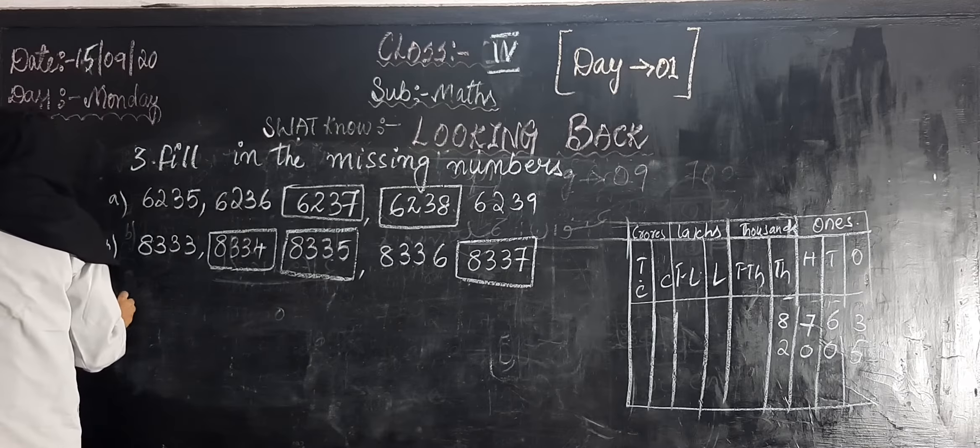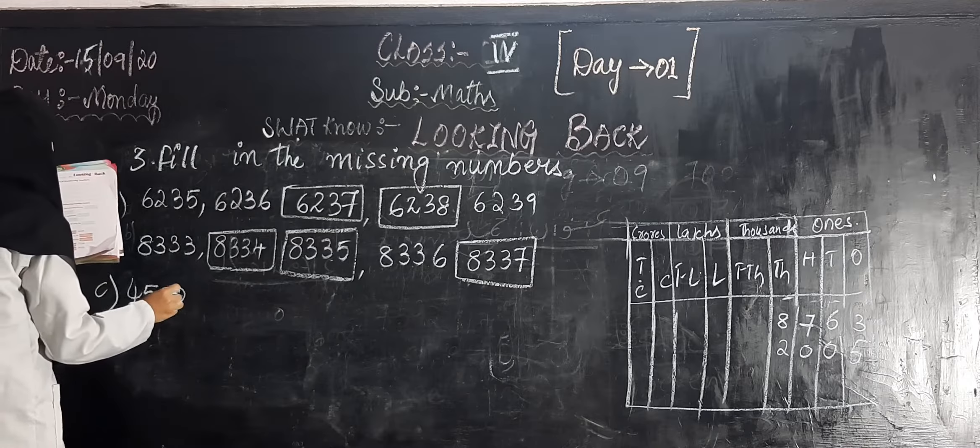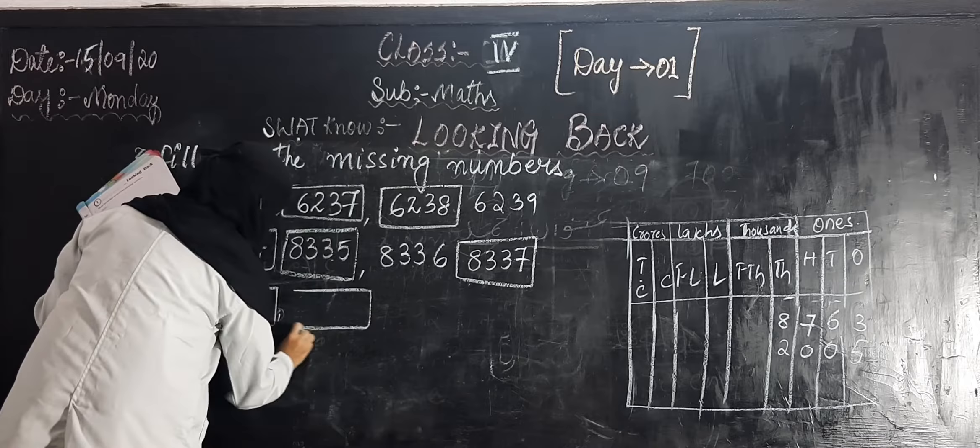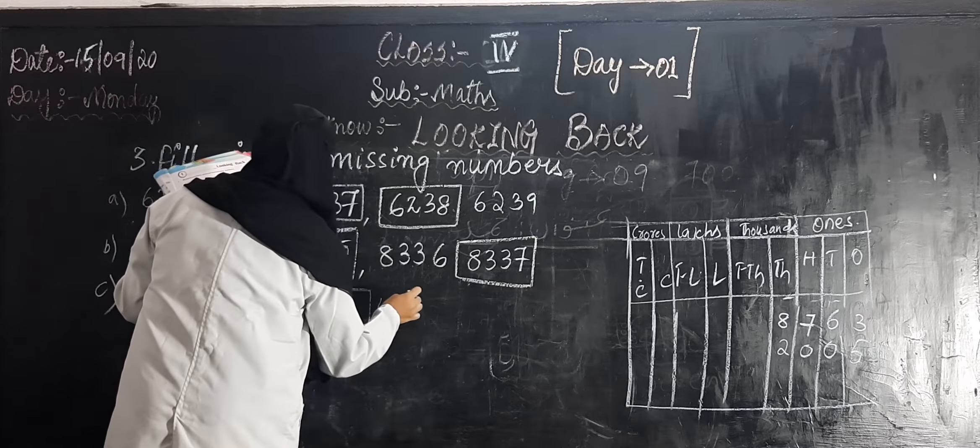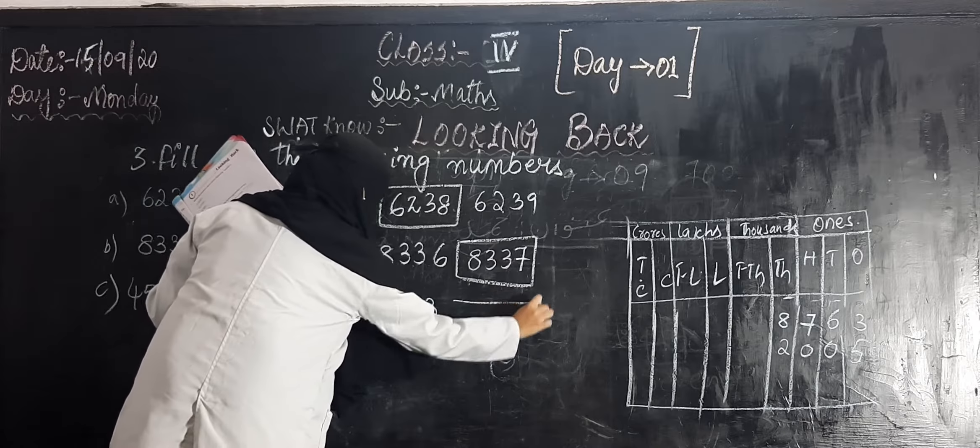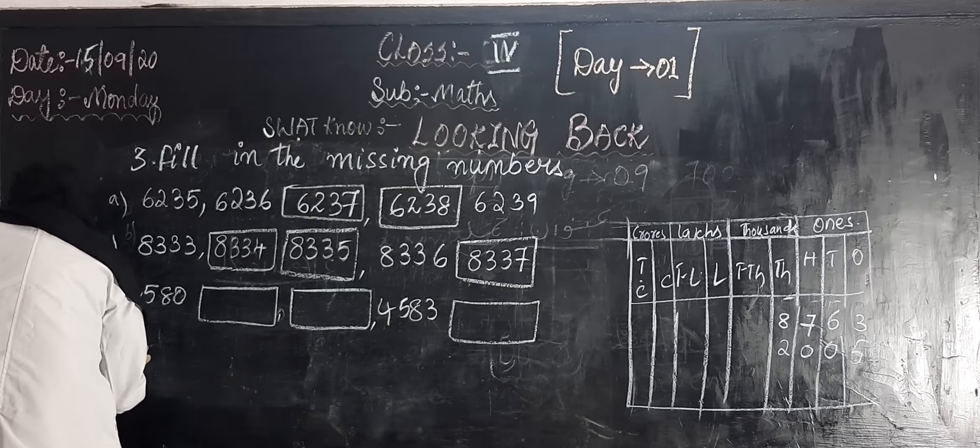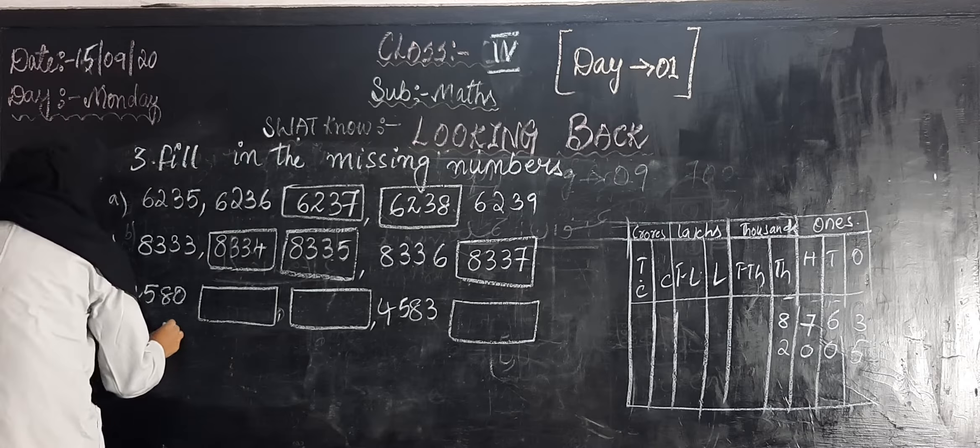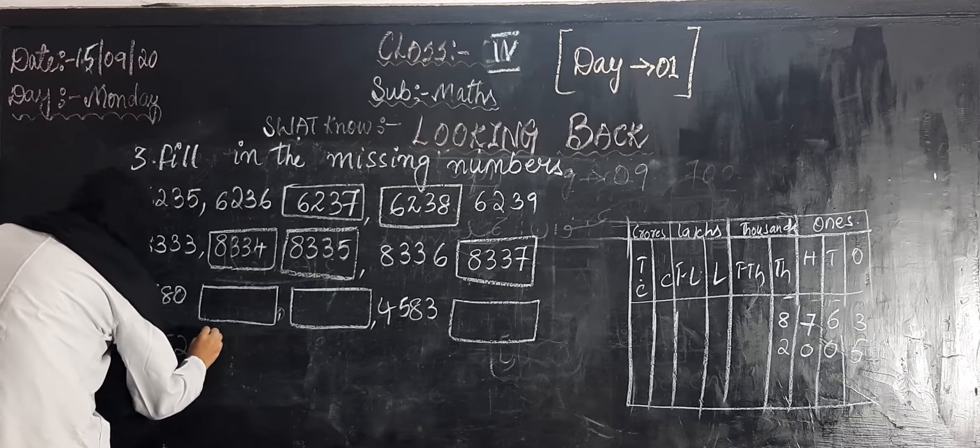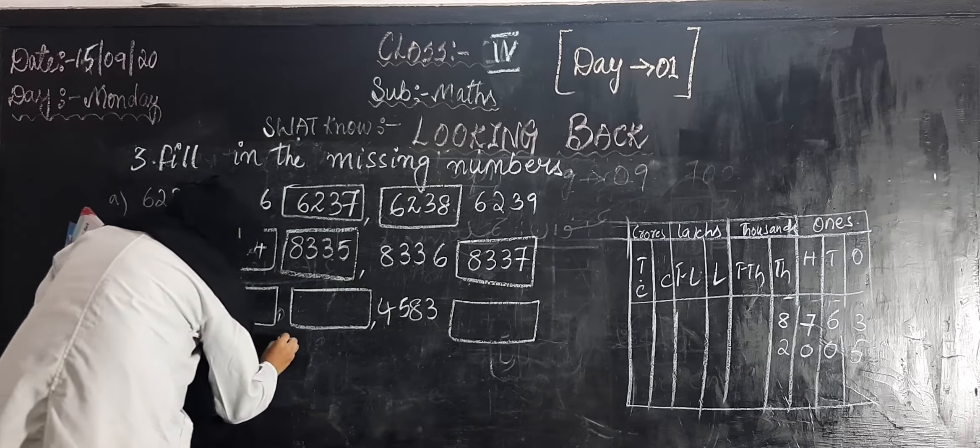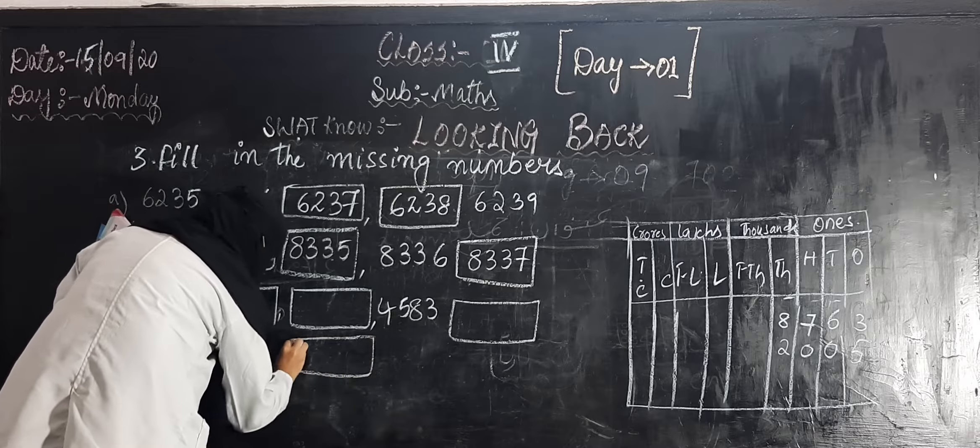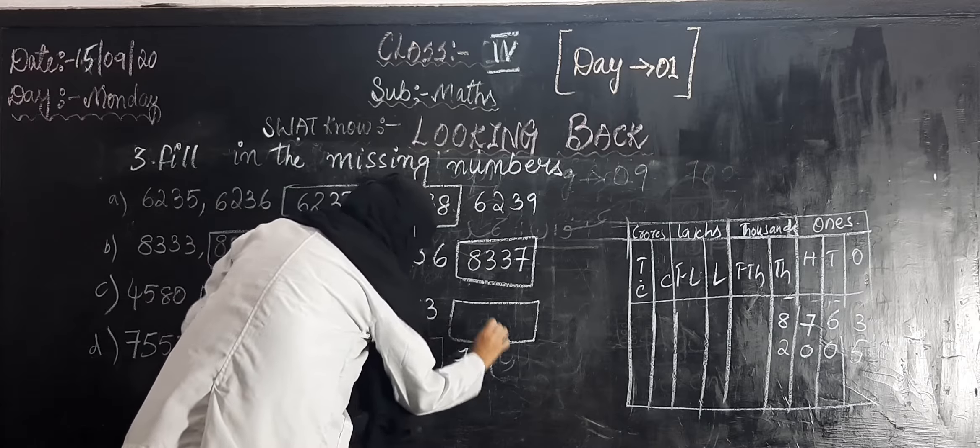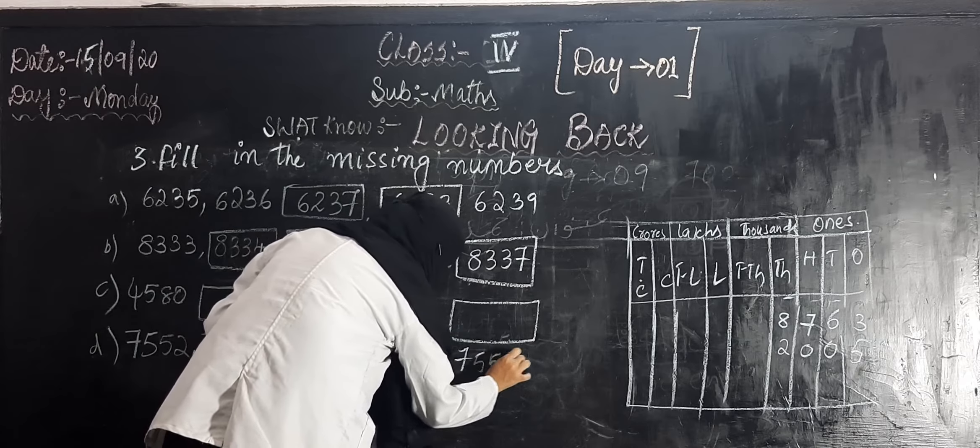C section, 4,580. Again, we have the empty box, two boxes is there. 4,583. 7,553, boxes is there. 7,556.